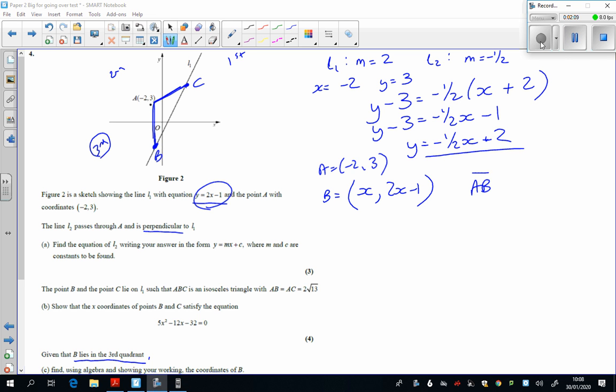To be honest, I prefer to do this as a vector. That from A to B, from there to there, is X add 2. From there to there, it's 2X minus 4. And now I want to find out the length of that vector.